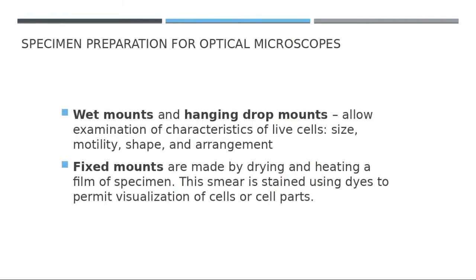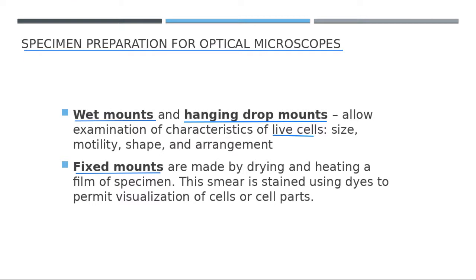When looking at a specimen, we have to prepare it. There are two types of preparation. The first is called the wet mount or hanging drop mount, used for fresh living objects — cells or bacteria may be seen moving around. The second type is the fixed mount, where the object is killed using heat or chemicals, so the object viewed is dead.